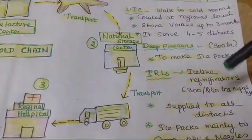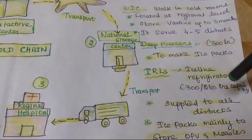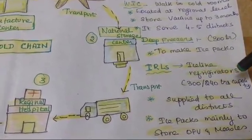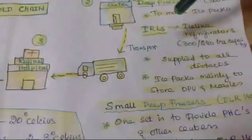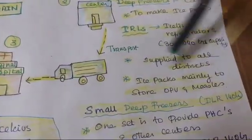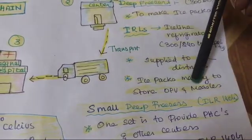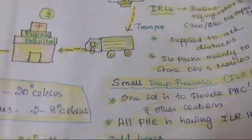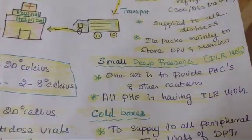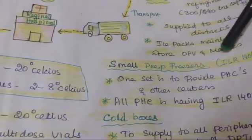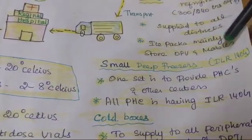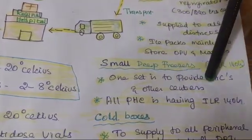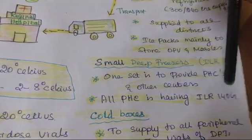ILR stands for Ice-Lined Refrigerator. The Ice-Lined Refrigerator has a capacity of 300 or 240 liters. The purpose of ILR is to supply all the districts with ice packs, and mainly to store OPV and measles vaccine, because these must be stored at minus 20 degrees Celsius. Smaller deep freezers are called ILR 140 or ILR 160, and one center provides vaccines to PHCs and other sub-centers. All PHCs have ILR 140.